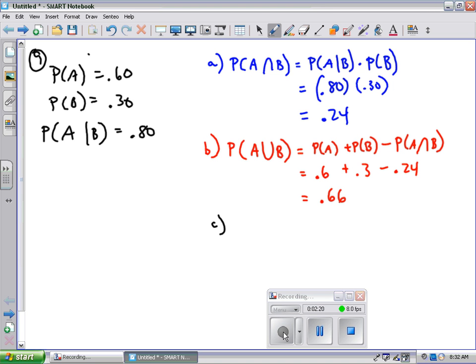Finally, on part C, if the company wins B, what's the probability it won't win A? So what's the probability of not A given B? And this one is not quite as complex as it might seem. Check out this part of the given. The probability it wins A if it wins B is 80%. So what's the probability it doesn't get A if it gets B? It's got to be 20%.